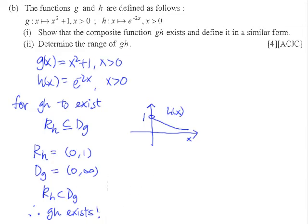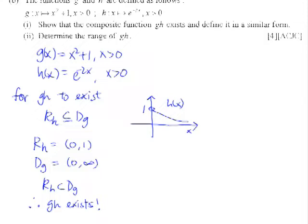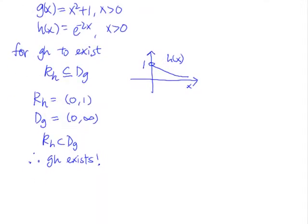Now that we know our gh exists, we have to define our gh. Getting gh is a very O-level exercise, so I think it shouldn't be a problem for you at all. gh(x) means you're going to put in the h(x) into your g(x). And that means you will have e^(-2x) squared plus 1. After you simplify this, you have something a little like this.